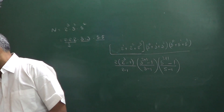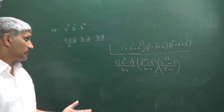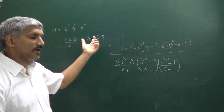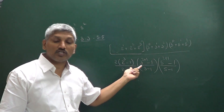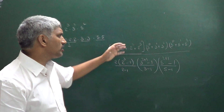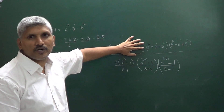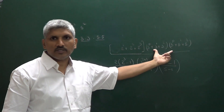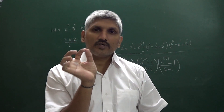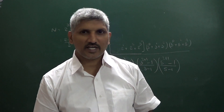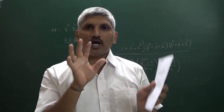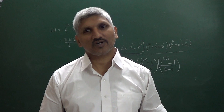So that is the discussion for the number of divisors, the number of even divisors, the sum of divisors, and the sum of even divisors. This is the way of selecting items from n identical items and how it applies to finding divisors. Bye bye.